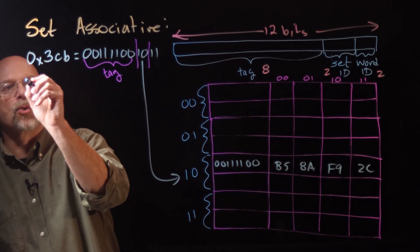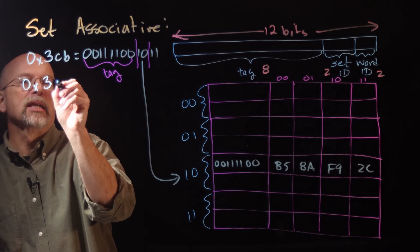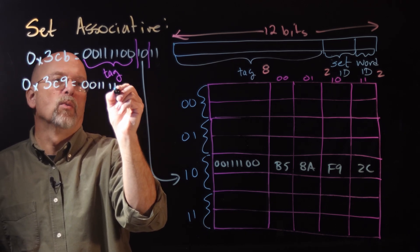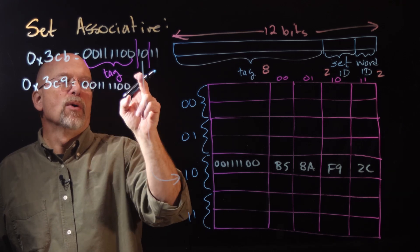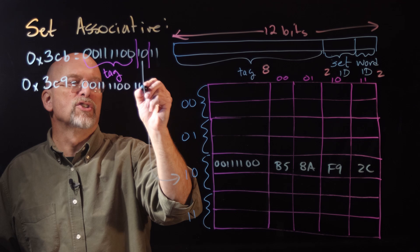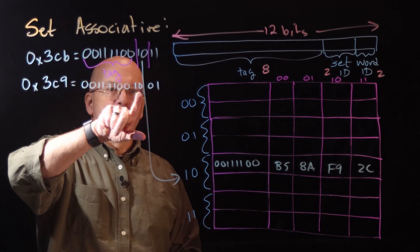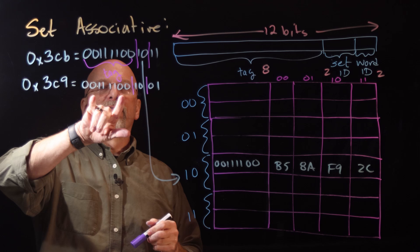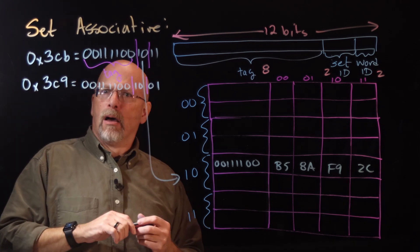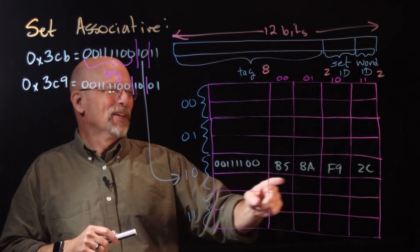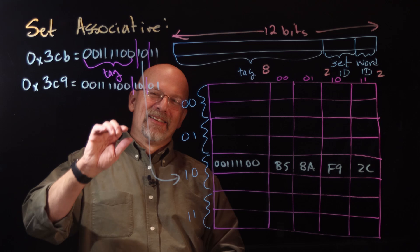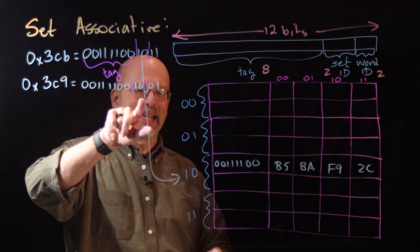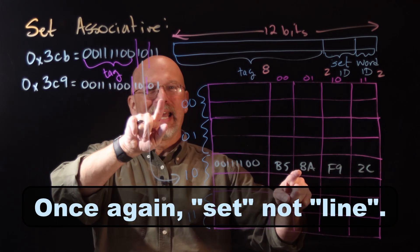Now let's say the processor wants to access address 3C9. Converting: 0011 1100 1001. The tag would be 00111100 and looking at the last four bits of 9 — which is 1001 — the set ID bits are still the same set 10. This means it's just a different element in the same block, corresponding to the byte 8A.